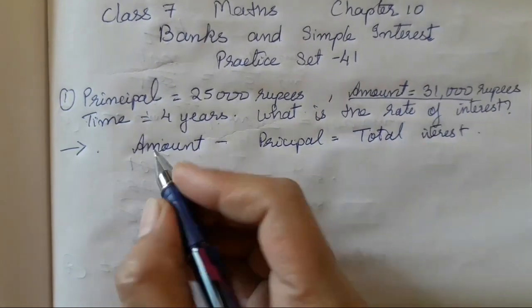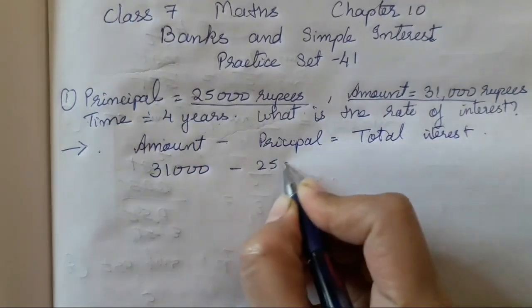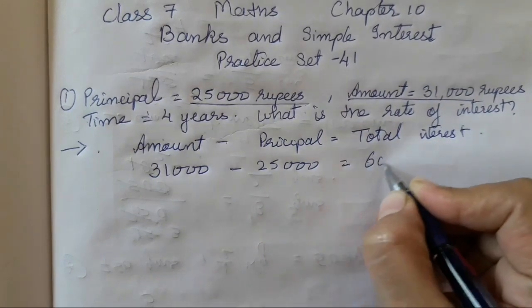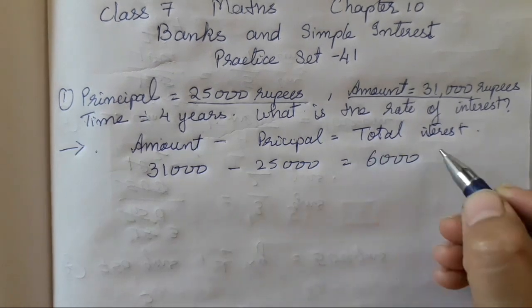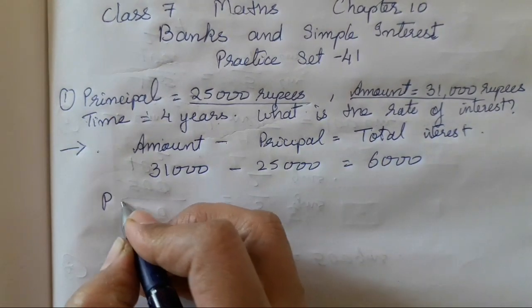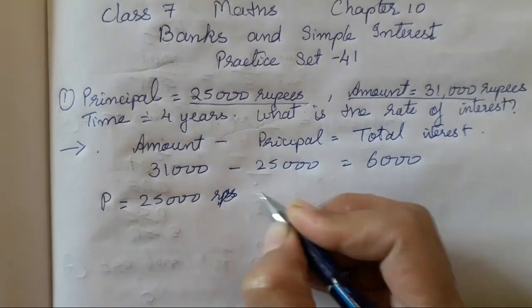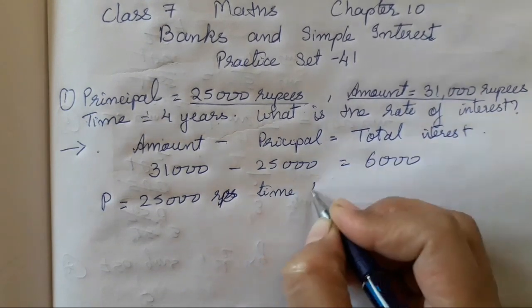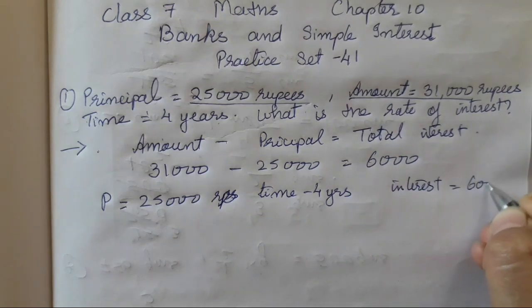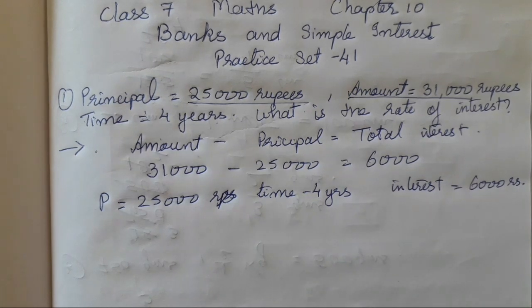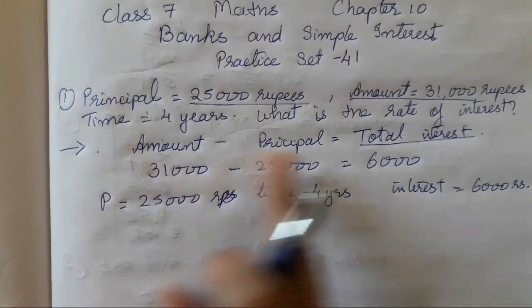So amount is how much? The amount is 31,000 minus principal 25,000 — the subtraction is going to be 6,000. So we have got our total interest now. The principal is 25,000 rupees, time is 4 years, and interest is 6,000. First we have found the interest using the formula: amount minus principal.